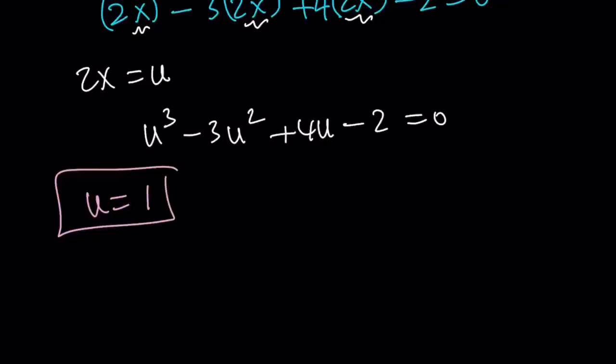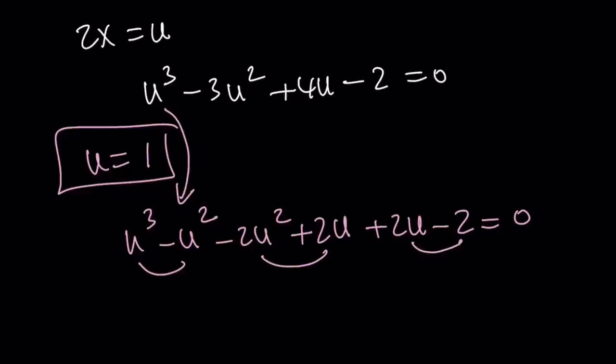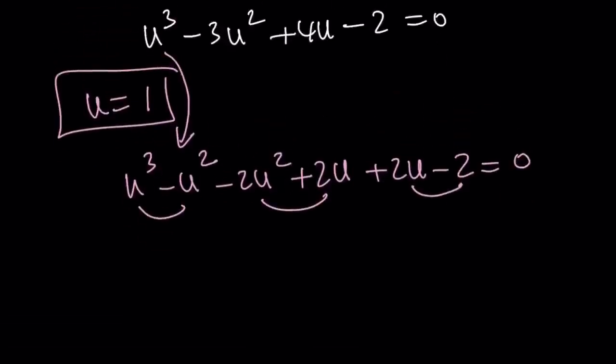Which is really cool because then we're going to end up with a quadratic. Let's go ahead and manipulate the coefficients here to make u minus 1 a factor. So like this, u cubed minus u squared minus 2u squared. And then I'm going to continue with plus 2u because notice that these terms will have a common factor of u minus 1. I hope that makes sense. And then plus 2u minus 2 equals 0. So now this will also have u minus 1. And that kind of checks out with the fact that u equals 1 is a solution.